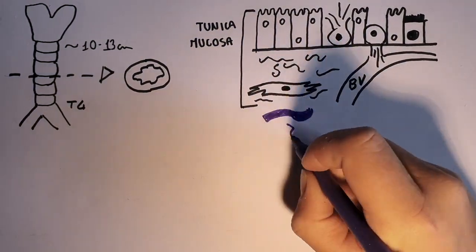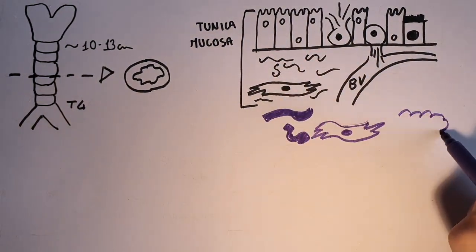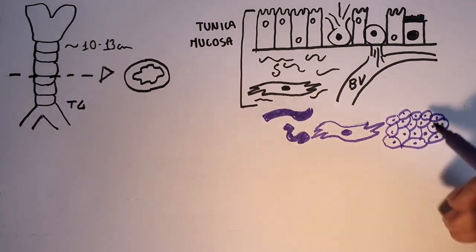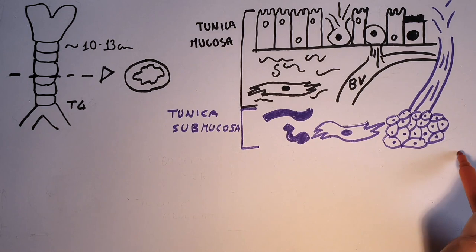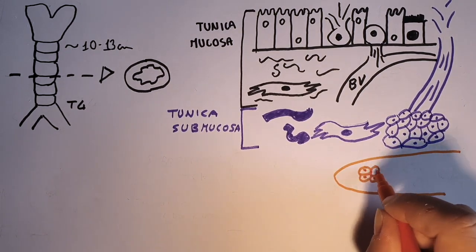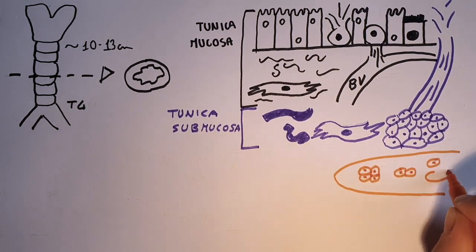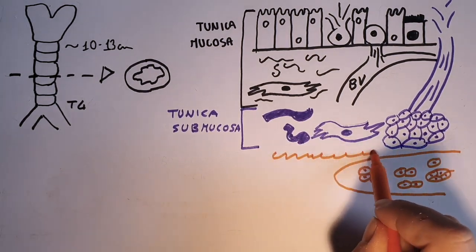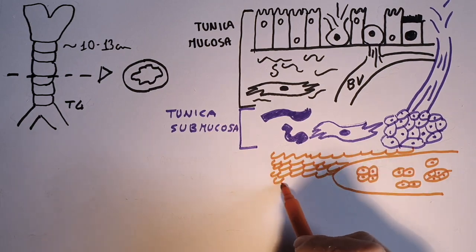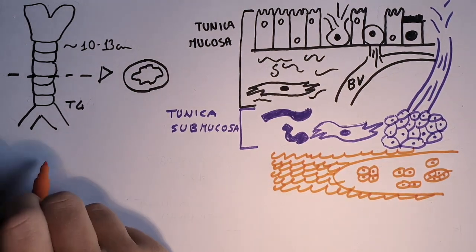In continuity with the lamina propria, we have a connective tissue called submucosa containing glands. Below this layer we can notice, depending on where we take the section, a cartilage layer, a fibroelastic layer, or even both. In fact, the trachea contains about 20 cartilaginous rings kept together by a fibroelastic tissue to prevent the structure from collapsing and also to let air flow into the lungs through the bronchial tree.